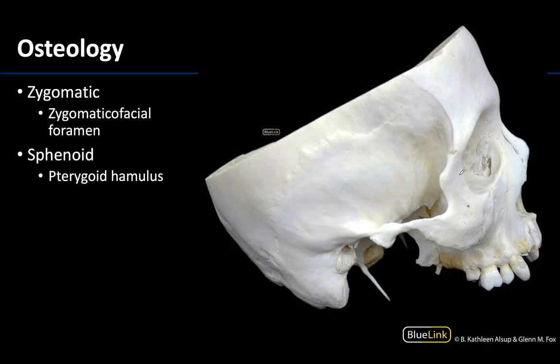We're going to start with this lateral view of the cranium and look first anteriorly at the zygomatic bone, which you can see right around this region. Right on the anterior surface of the zygomatic is the zygomaticofacial foramen, which I am circling. You can see it's a very small foramen and it is where the zygomaticofacial neurovasculature will traverse — so very well named.